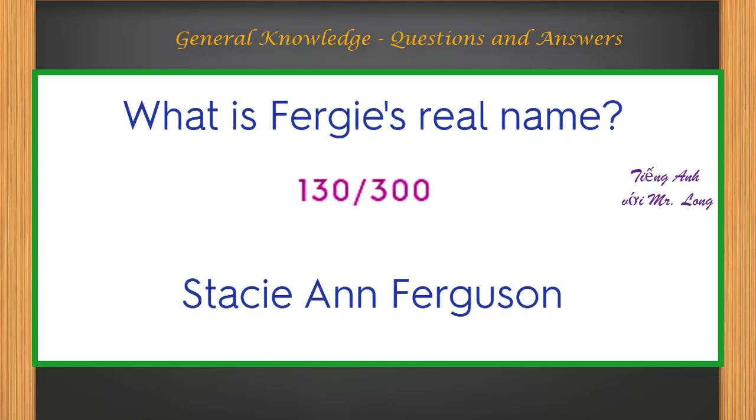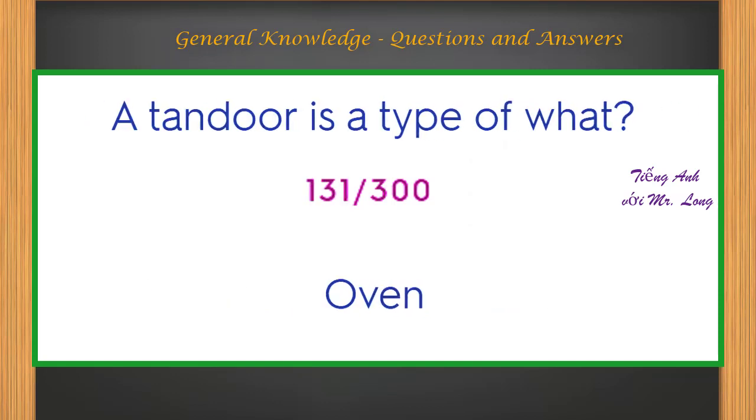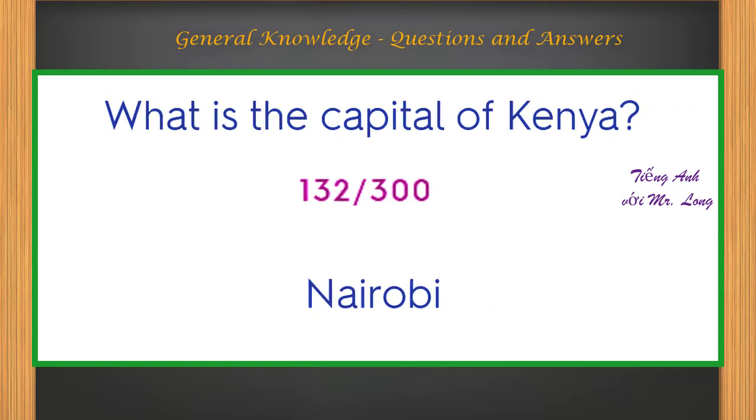What is Fergie's real name? Stacy Ann Ferguson. A tandoor is a type of what? Oven. What is the capital of Kenya? Nairobi.